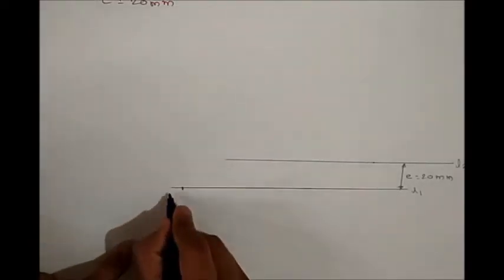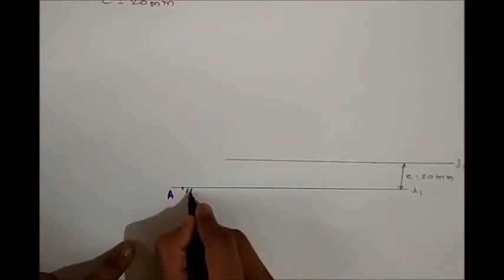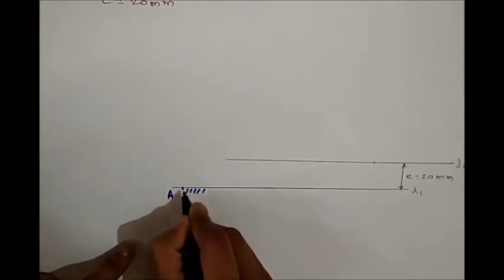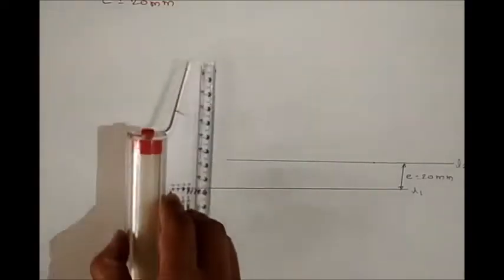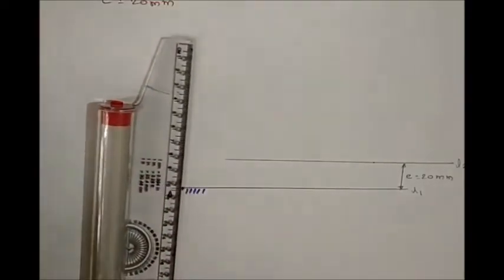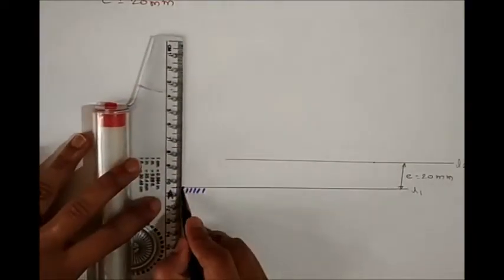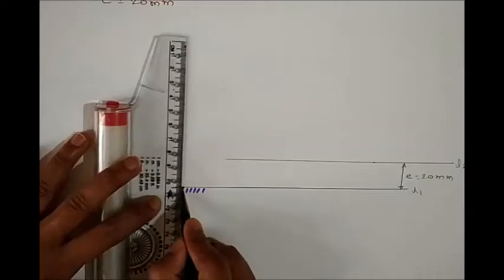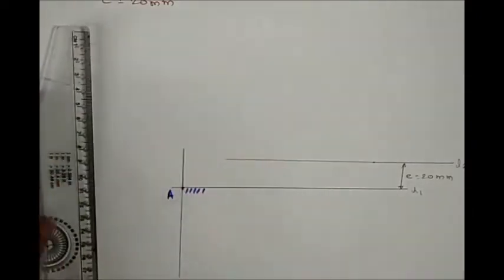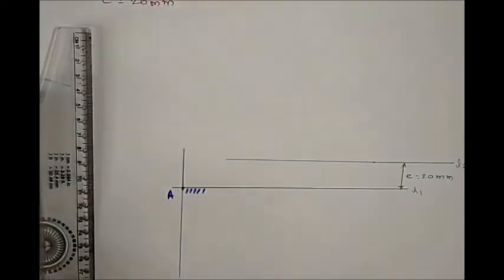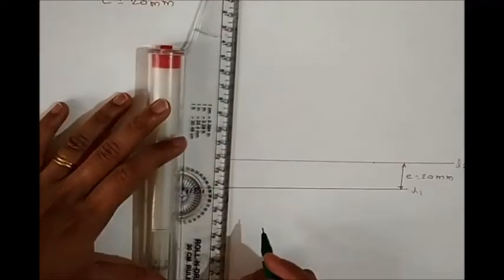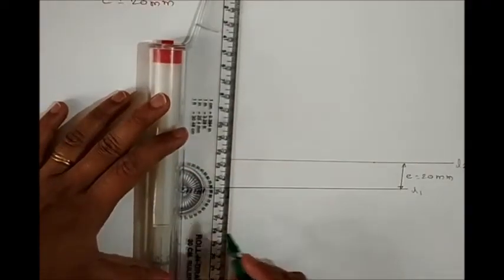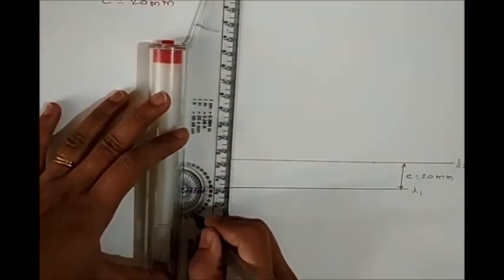Take an arbitrary point A, which we are going to consider as a pure point. Draw a vertical reference line through point A. Now rotate A to an angle of theta 1-2 divided by 2, which is 20 degrees.